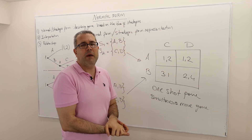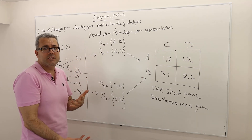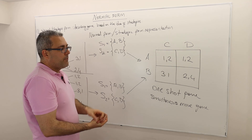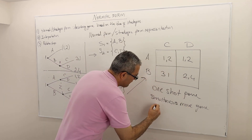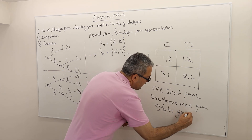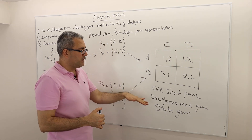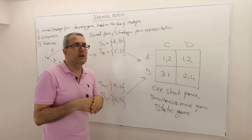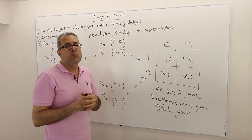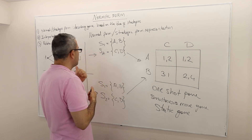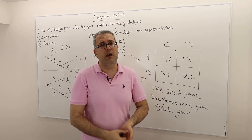Our first investigation will start with static games — another name for one-shot or simultaneous move games, meaning nothing sequential or dynamic. We'll start with static games because they're easier to analyze, and once we've built enough tools we'll move to slightly more complicated extensive form games. But before that, we'll talk about one more thing: beliefs. That's coming up in the next episode.